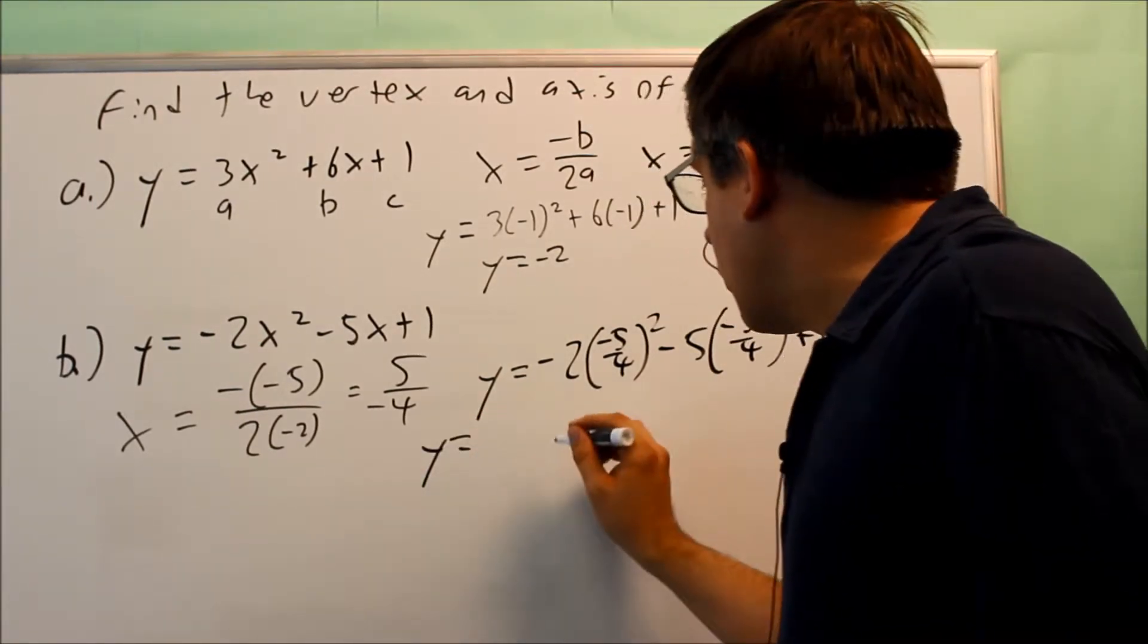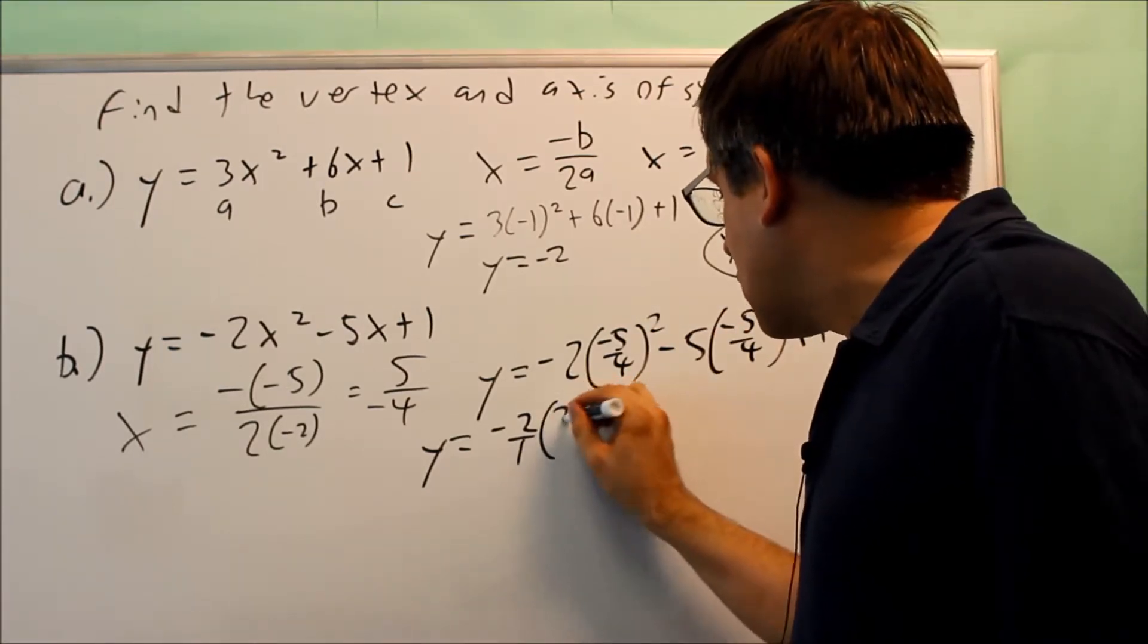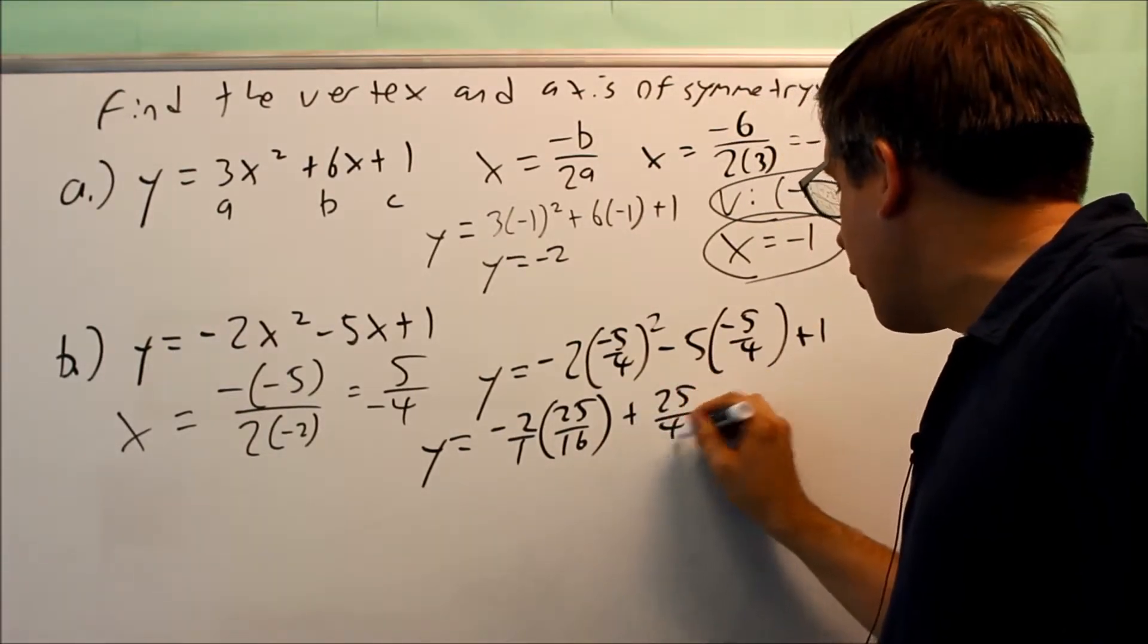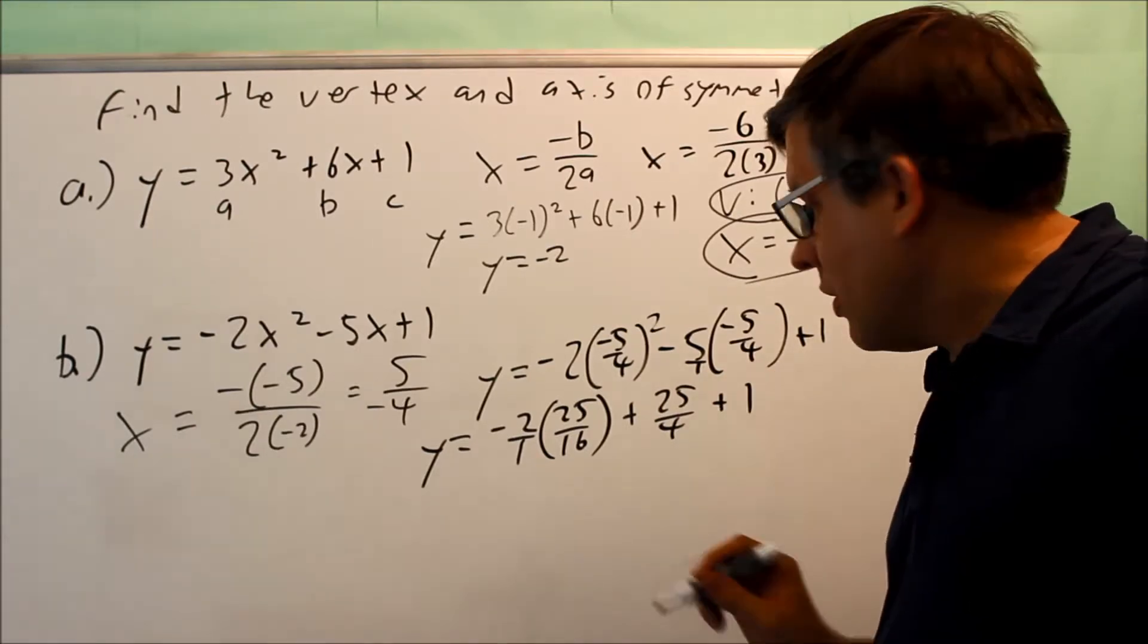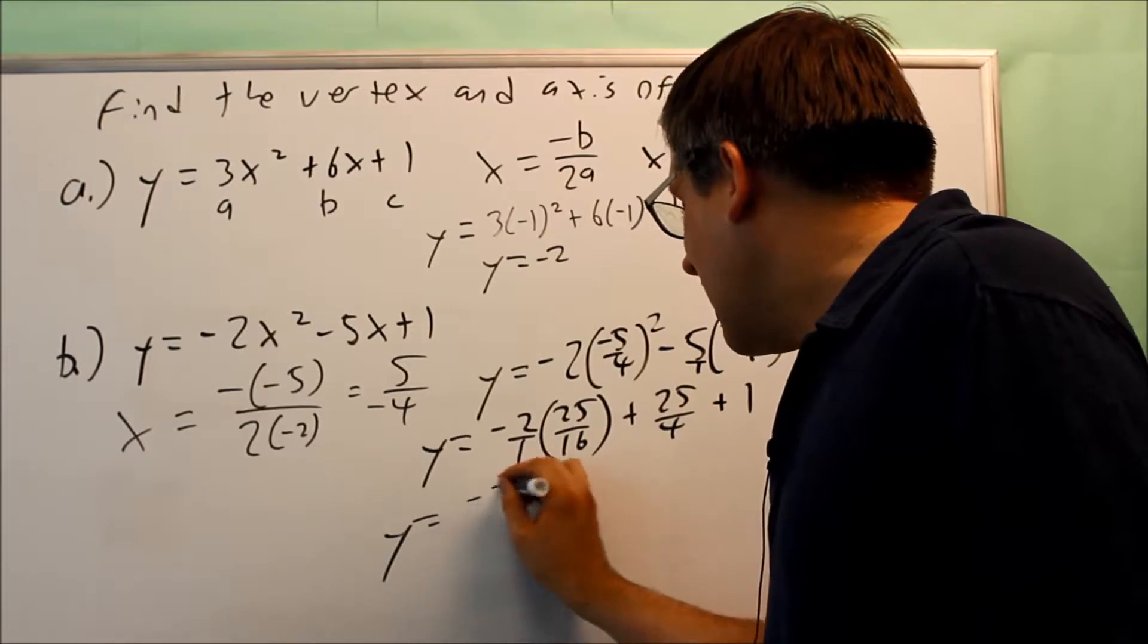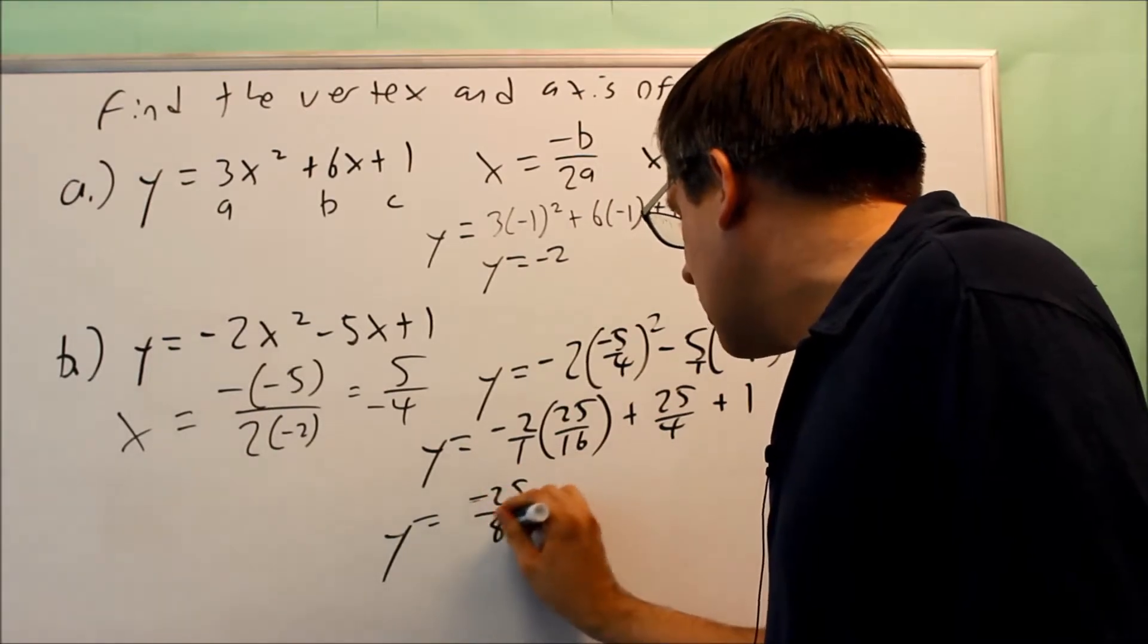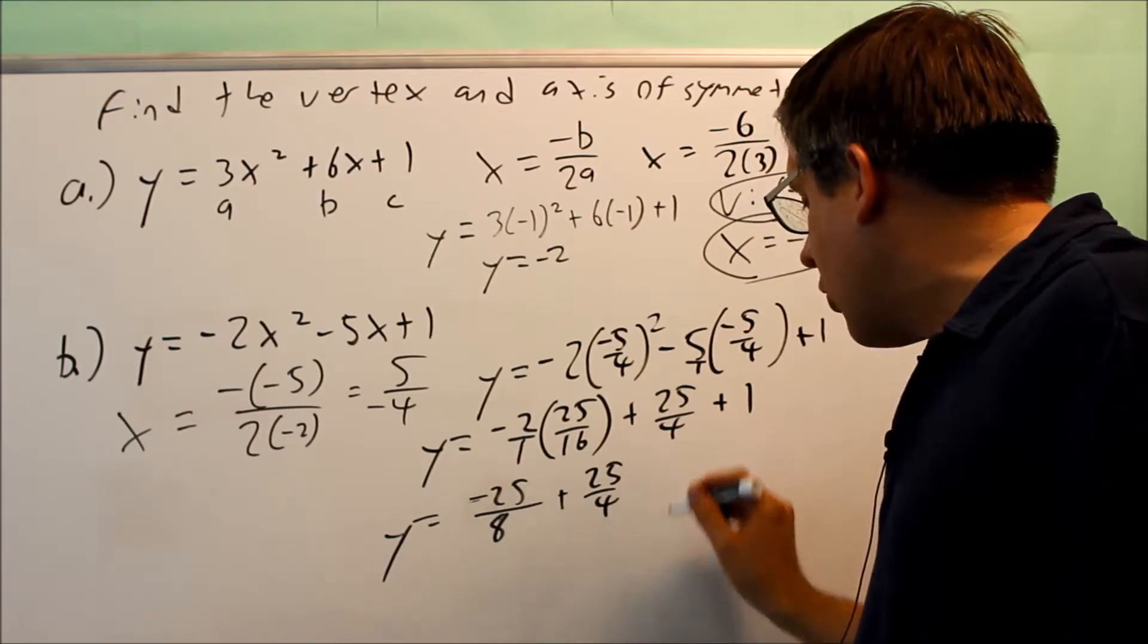So to do that, we're going to write this as negative 2 over 1. We square the top and bottom on that, that's 25 over 16. Then you get plus 25 over 4, because this is going to be written as 5 over 1. And you get plus 1. That can be reduced to negative, that 2 is going to go away. So you're going to get negative 25 over 8. Now the rest of these, you have to get common denominators for.